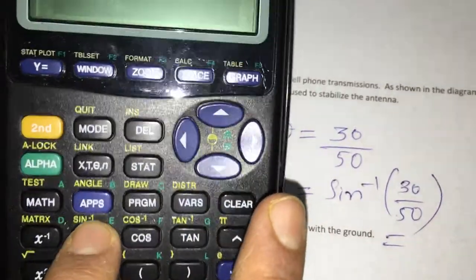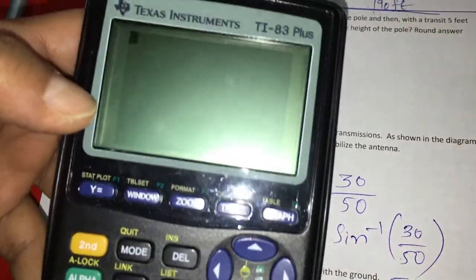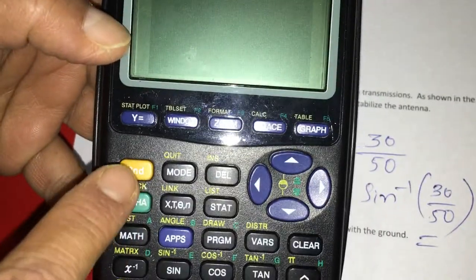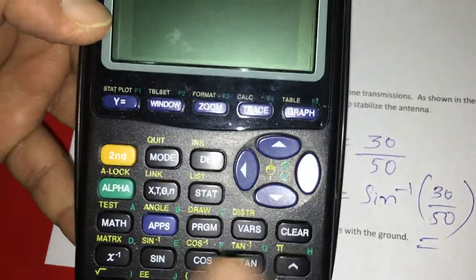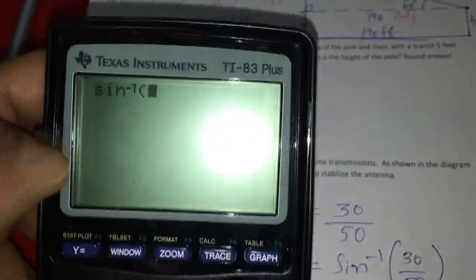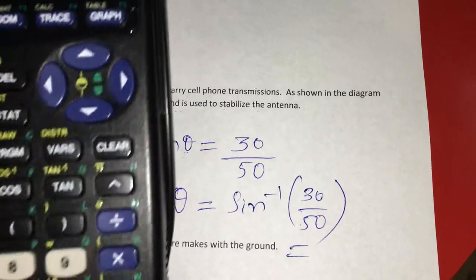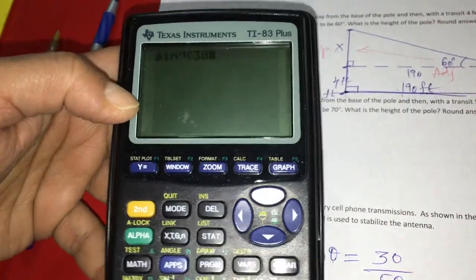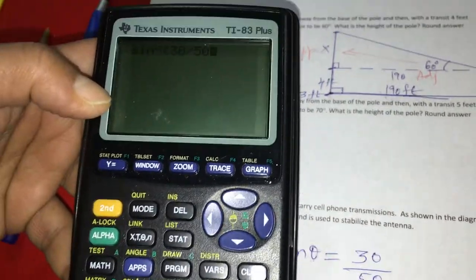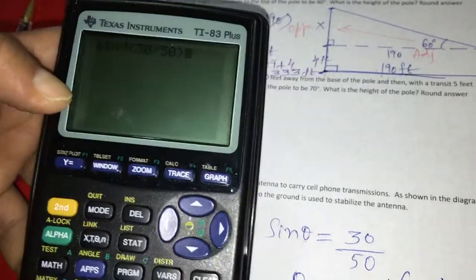So to get sine inverse, I have to press second, this yellow button, and then sine. See, now I got sine inverse. And what is the value? 30 divided by 50, and close the parentheses. Now I got sine inverse of 30 over 50 on the calculator.